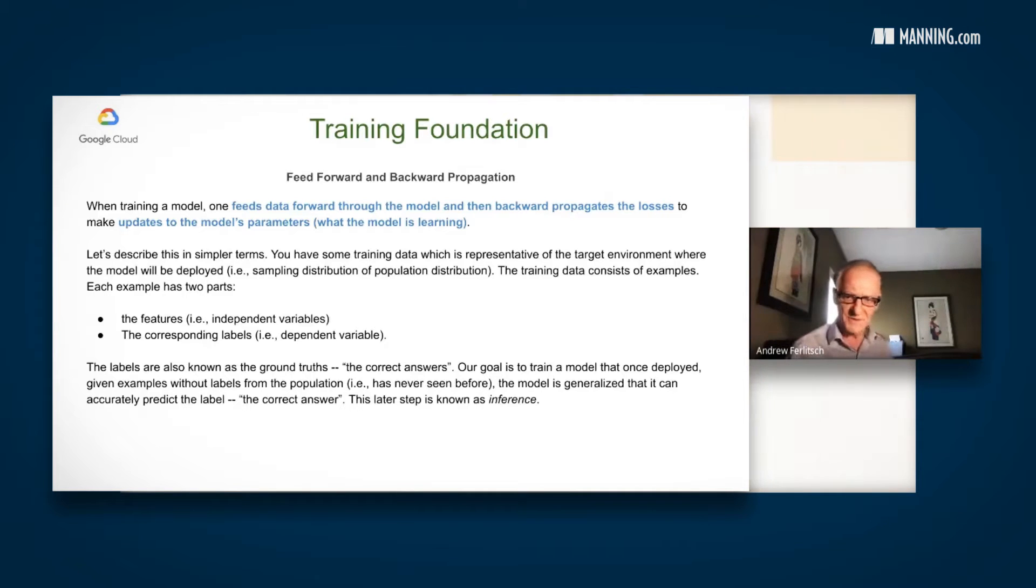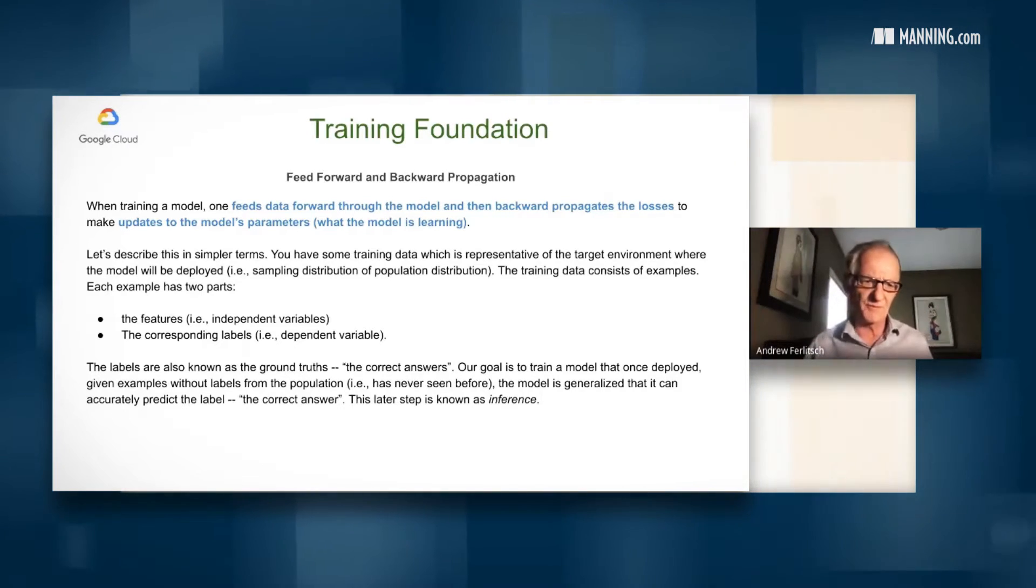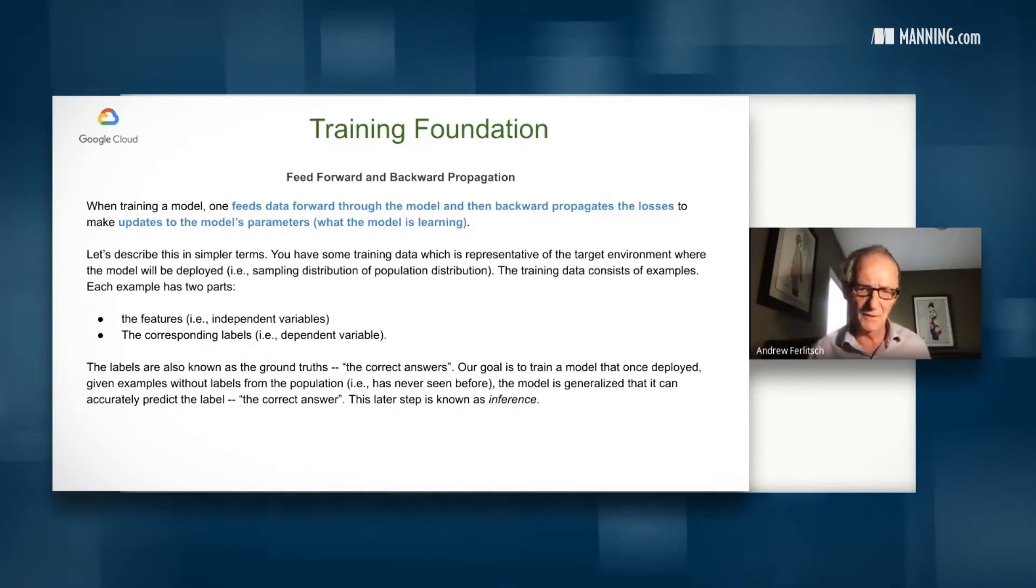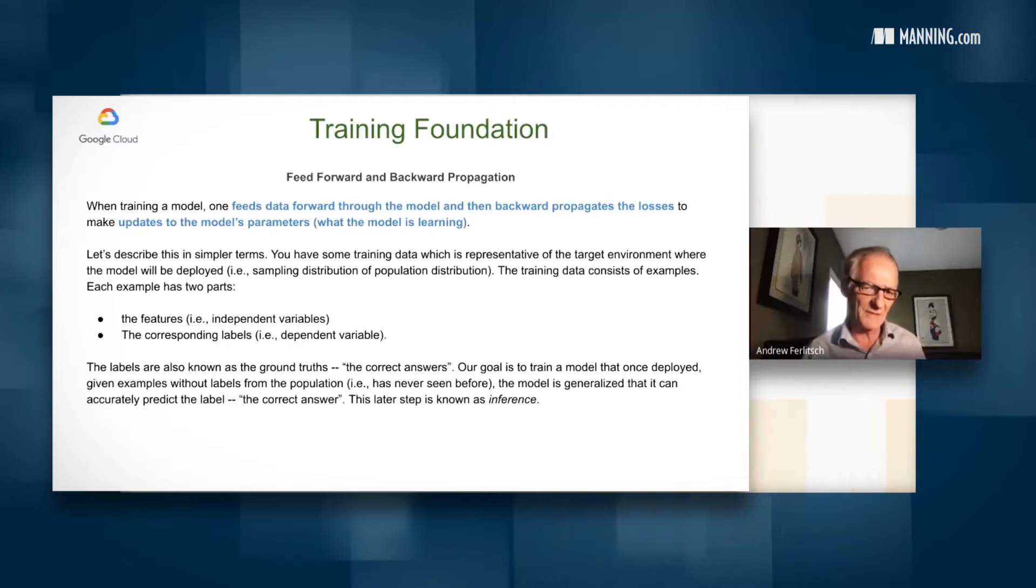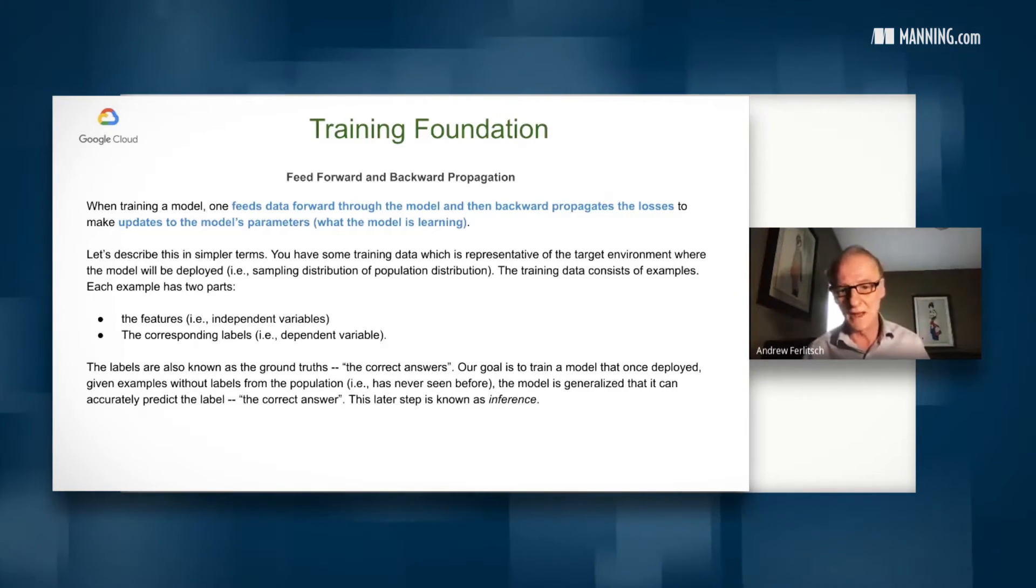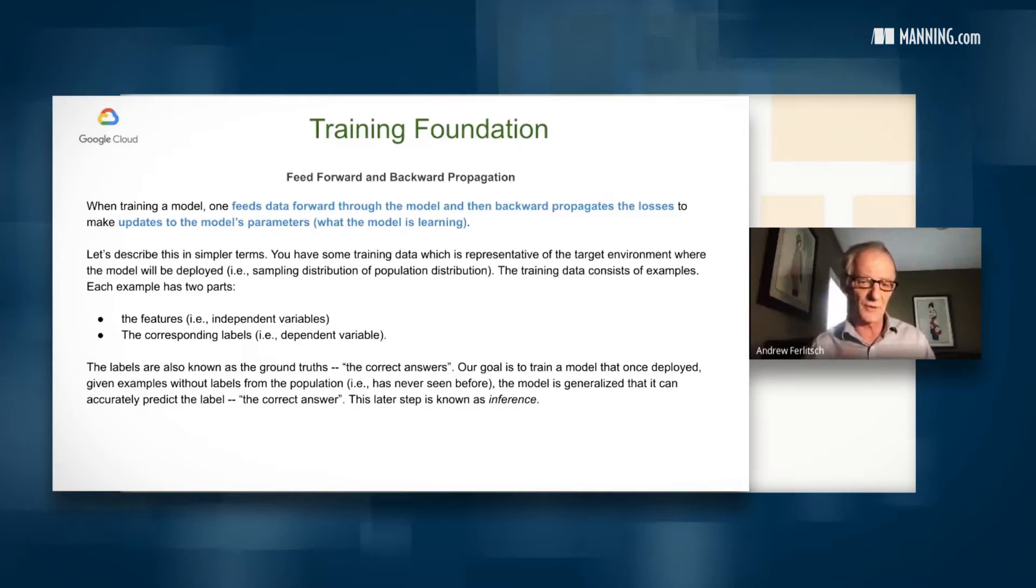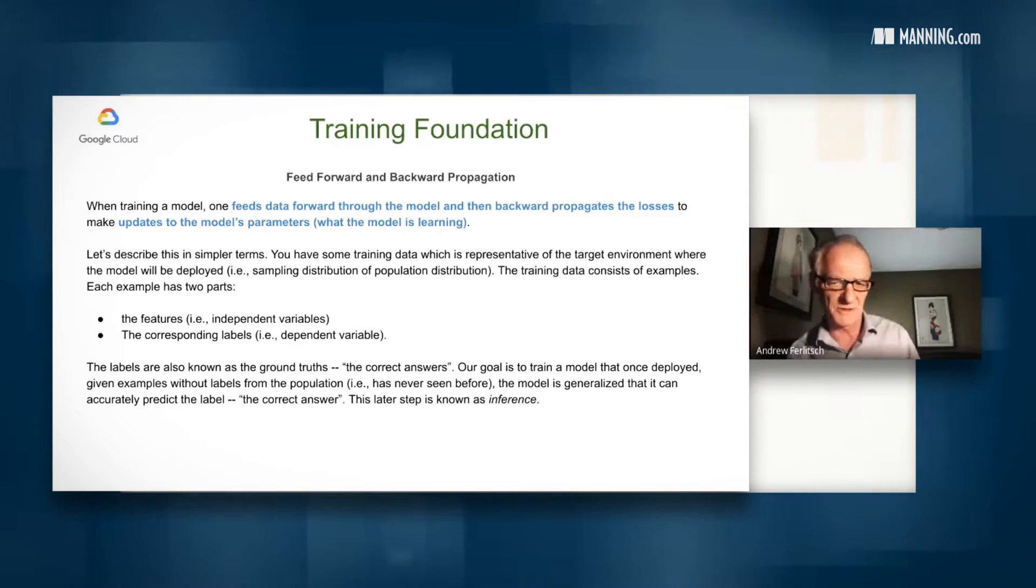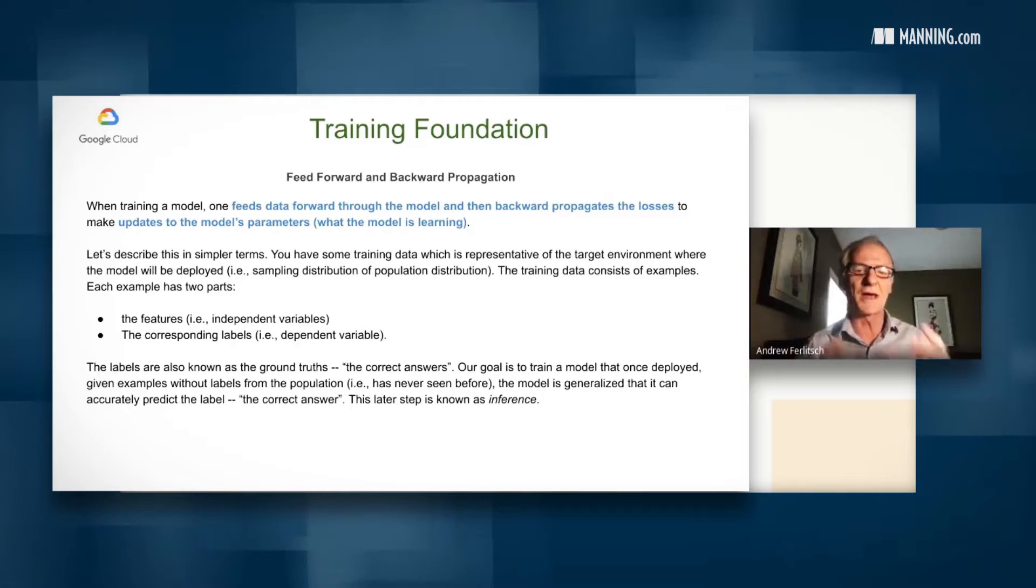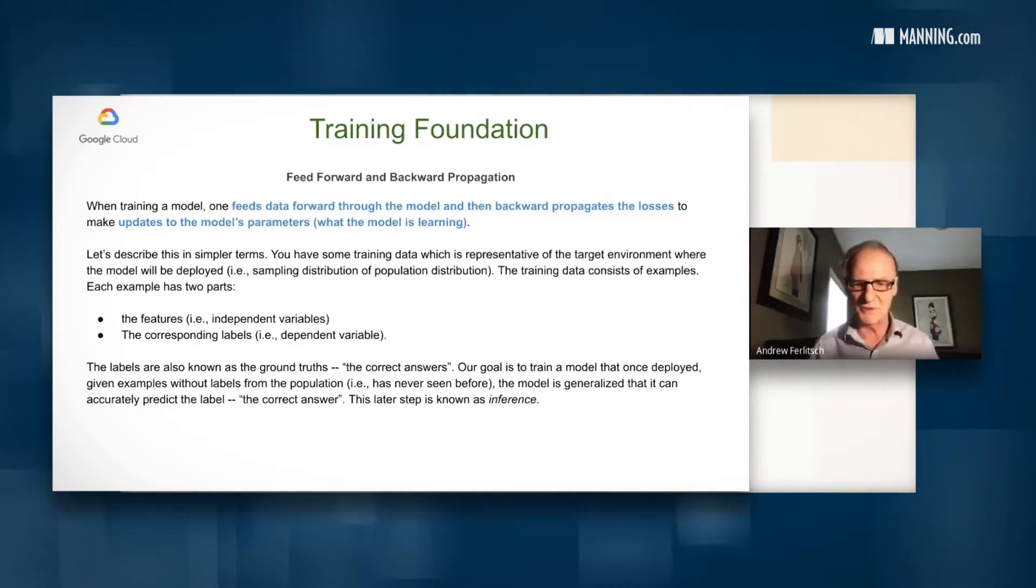So let's describe this in a little bit different terms. So what we want to do is we want the model to perform well when it's deployed, and we're going to deploy it in the real world, and that means it's going to see examples it was never trained on. Your data set in a sense is a subset of the real world. We're going to call the real world the population distribution. The population distribution just means if you had every example there was in the population, and the sampling distribution means you just have a subset of it.